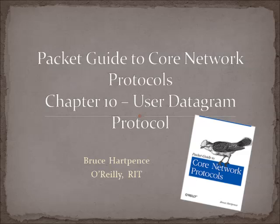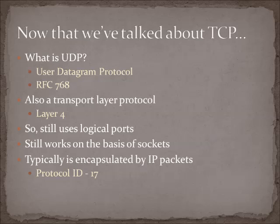Welcome back to another video on networking. This time we are covering chapter 10 in the Packet Guide to Core Network Protocols: the User Datagram Protocol. The last couple of videos we talked about TCP and its connection-oriented nature, sequence numbers, and handshakes. TCP is a transport layer protocol at layer 4. So now that we've got our hands wrapped around what it means to be a layer 4 transport layer protocol, what's the scoop with UDP?